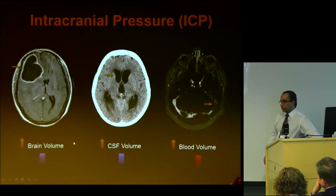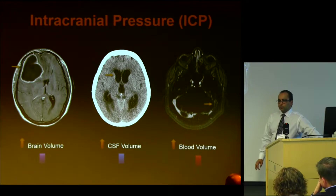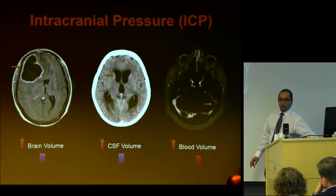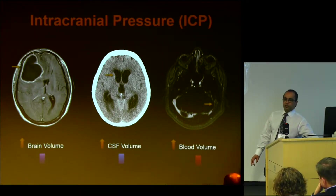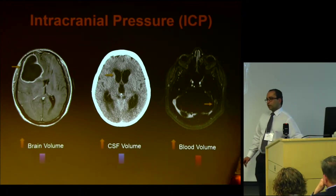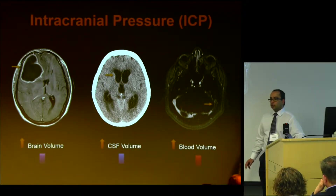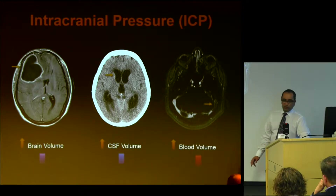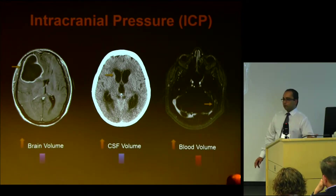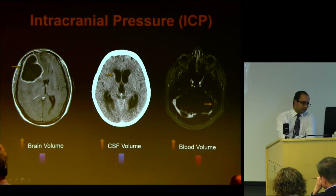Clinically, when someone is being worked up for potentially elevated intracranial pressure, they're coming in with signs and symptoms of high pressure. What we're looking for is an intracranial mass, an accumulation of CSF through intraventricular or extraventricular obstruction of CSF flow or resorption, or obstruction of blood flow causing increased back pressure in the venous system.